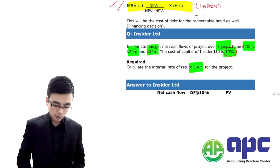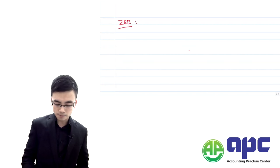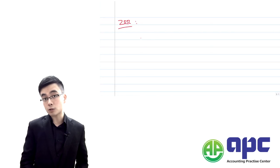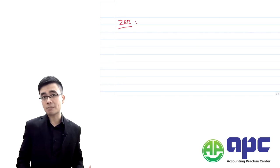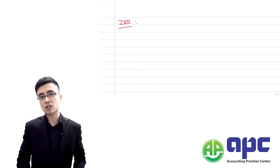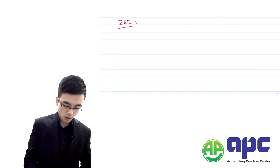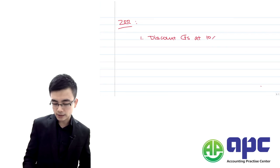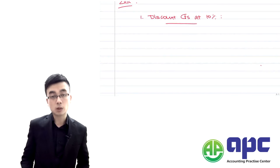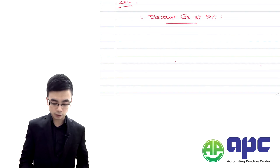So let's see how we're going to do this. In order to calculate the IRR, first of all we have to pick up two discount rates — it's entirely up to you in the exam. For example, we have 10% from the question, and we're also going to discount at 20%. So first of all, we're going to discount the cash flows at 10%, applying the NPV calculation same as before.